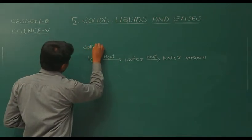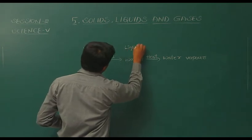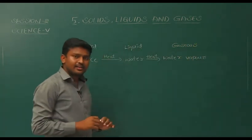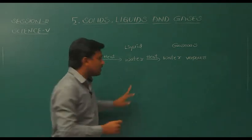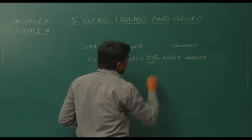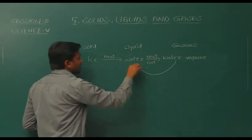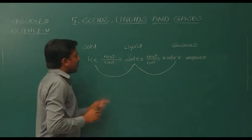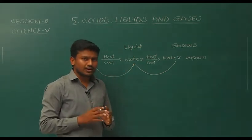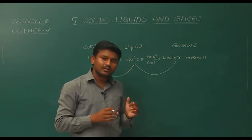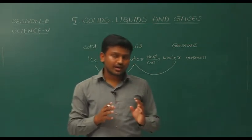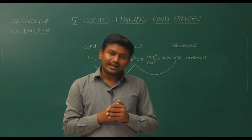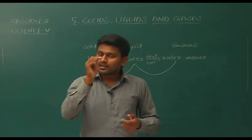Ice is the solid state, water is the liquid state, and water vapour is the gaseous state. We can also convert water vapour back into liquid water. If we cool water vapour, it converts into water. If we further cool water, it converts back into ice. But how can water vapour be converted into water? There are many daily life situations we can notice — for example, if you take out a cool water bottle, water droplets form immediately on its outer surface.